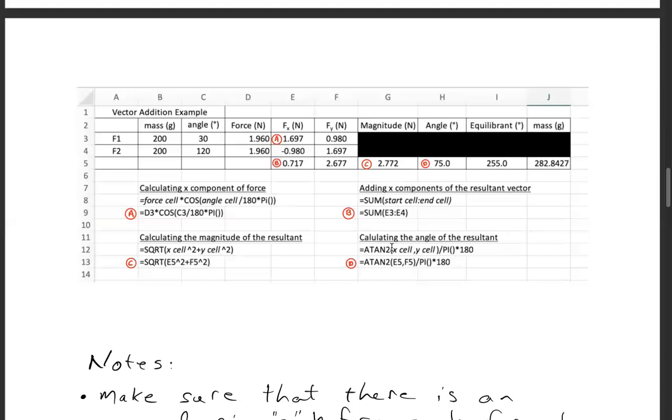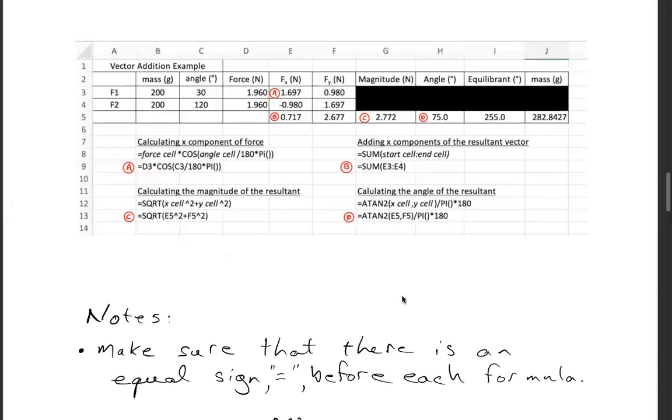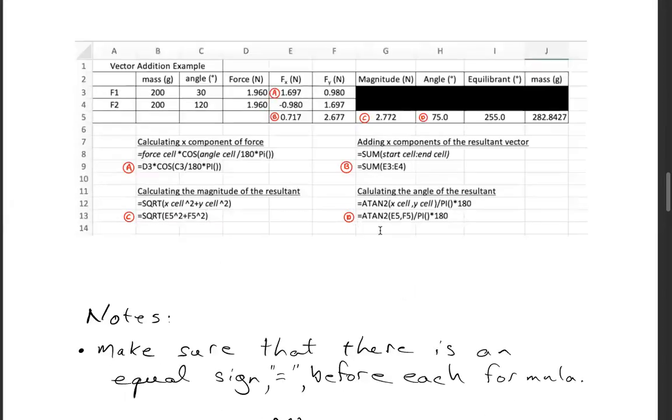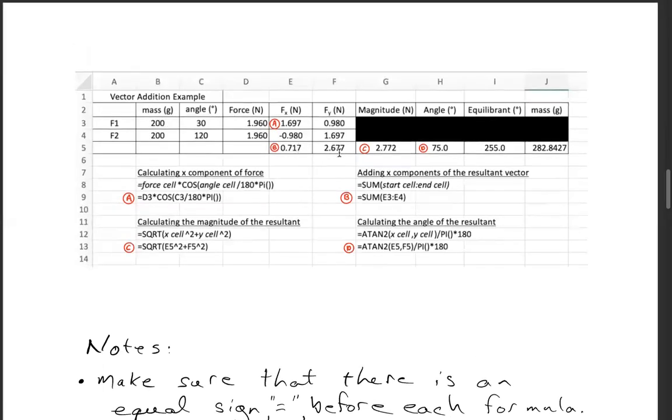And to calculate the angle, I use ATAN2 as opposed to ATAN because if you just use ATAN with the quotient, you don't know what quadrant you're in. But ATAN2 preserves the quadrant and puts it in the right direction. In our case we're in the first quadrant anyway, so it really doesn't matter, but I'll explain later how it makes a difference. So you take ATAN2 of E5 comma F5, the x component and the y component, divided by pi times 180. That will give it to you in degrees as opposed to radians.